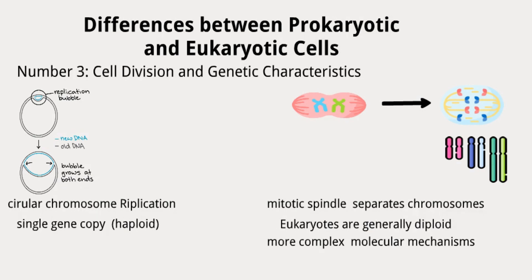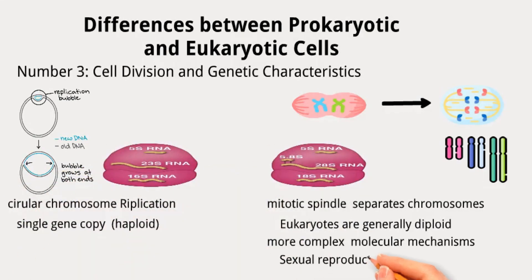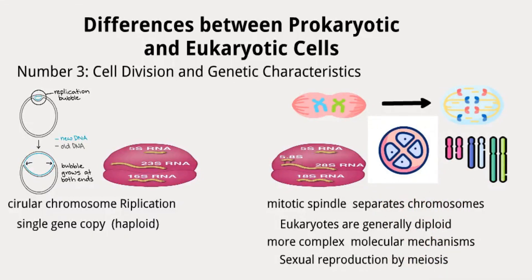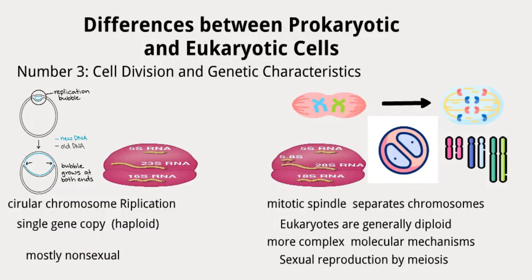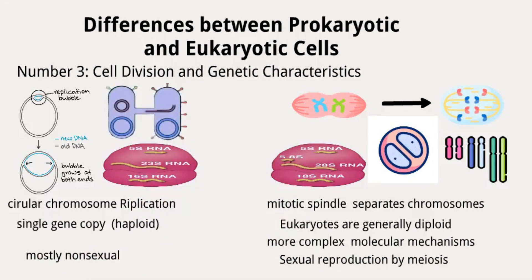For example, larger ribosomes exist in eukaryotic cells. Sexual reproduction in eukaryotes typically involves meiosis and fertilization, while prokaryotes are mostly non-sexual, although some can perform conjugation to exchange DNA fragments. In summary, eukaryotic cells are more complex and compartmentalized, with a nucleus and various organelles, while prokaryotic cells are simpler, with a nucleoid and fewer membrane-bound structures.